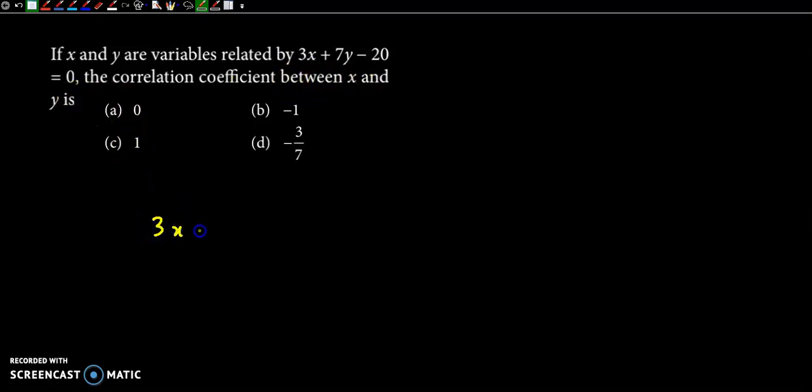Ab yahaan par jo equation humay diya hua hai, this is a linear equation in two variables. Aur iska jo graph hota hai, that is a straight line. The graph of this linear equation is a straight line.